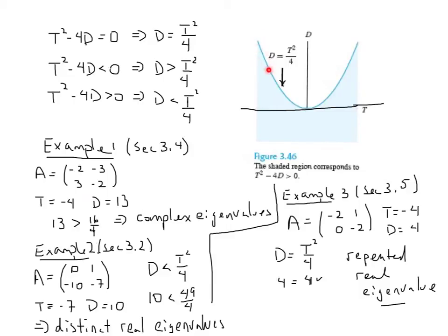It turns out that if we have a matrix that lives on this, where its trace and determinant place it somewhere on this curve, we know we'll be in a situation of repeated eigenvalues.